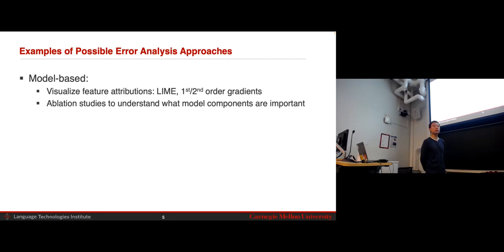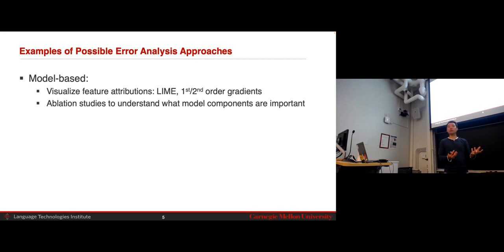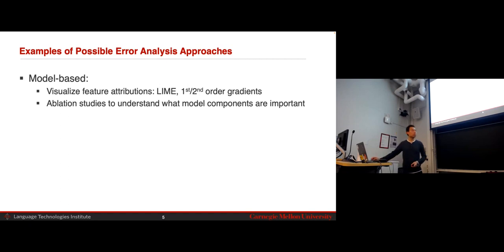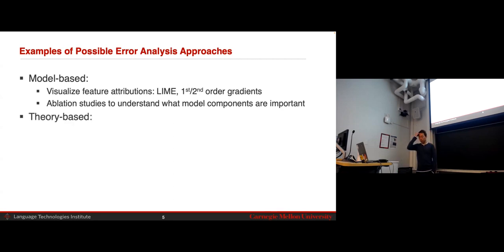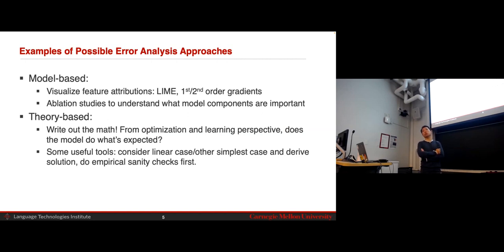Ablation studies let you see which parts of the model are important. Some papers survey a field — for example, contrastive learning — where many papers change a loss function or the way you select positive and negative samples. Hundreds of these papers are published, and then someone benchmarks all of them with the same amount of compute and hyperparameter tuning and finds they all perform similarly to the original method. Careful ablation studies can determine whether model components that were claimed to be required are actually required. Finally, theory-based approaches: sometimes you start with big deep learning models with multiple layers and nonlinear activations — can you just look at a simple linear case and see whether the model is expected to perform well even there? If it doesn't work in a simple case, it's not going to work in a complex case.